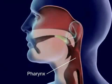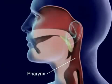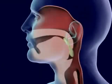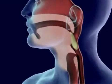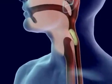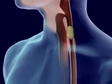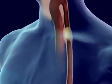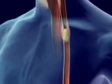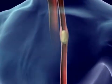Food in the pharynx stimulates the swallowing reflex. The larynx is pulled upward to meet the epiglottis and seal off the trachea. Food goes from the pharynx to the esophagus.